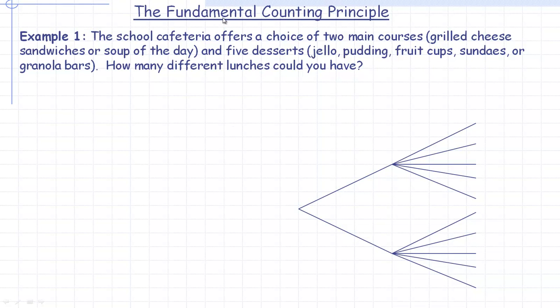In this tutorial we'll talk about the fundamental counting principle, which some people also call the multiplicative accounting principle. In this example, the school cafeteria offers a choice of two main courses — grilled cheese sandwiches or soup of the day — and they offer five desserts: jello, pudding, fruit cups, sundaes, or granola bars. The question is how many different lunches could you have?